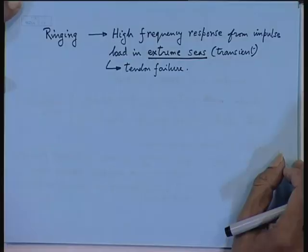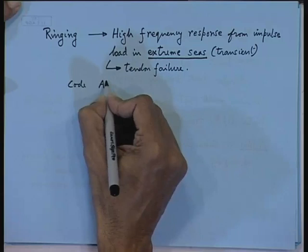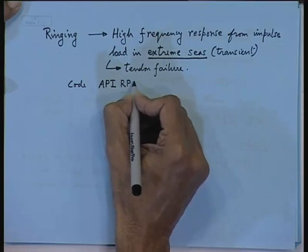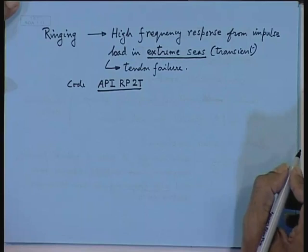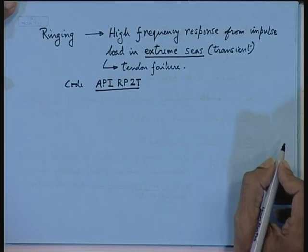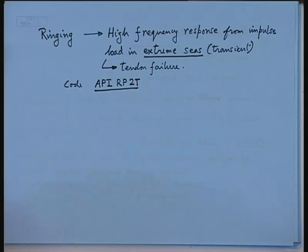These are some of the points that you should remember. The code that you follow is API — American Petroleum Institute — API Report 2T. These reports of the American Petroleum Institute are fundamental to your design. Wherever you are designing semi-submersibles or TLPs, you should follow both codes: ABS-API or DNV-API.